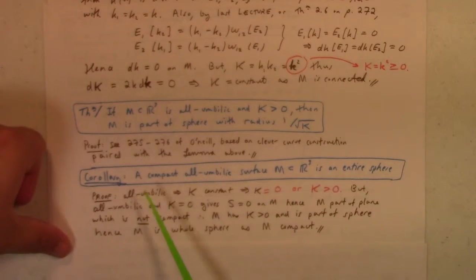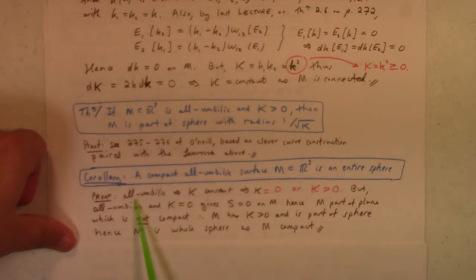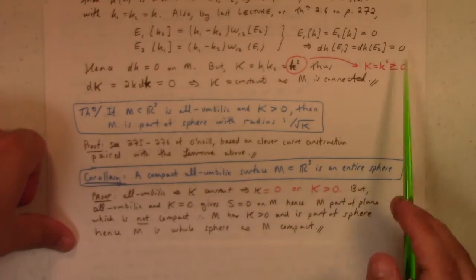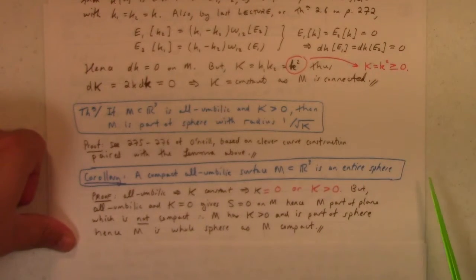The corollary is the following. All compact, all umbilic surface is an entire sphere. So I can go through the proof of that with you here. All umbilic means that the Gaussian curvature is constant. And it's also, remember, that's out of frame, but we had that the constant was greater than or equal to zero.